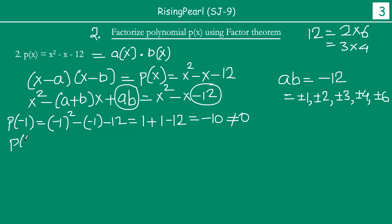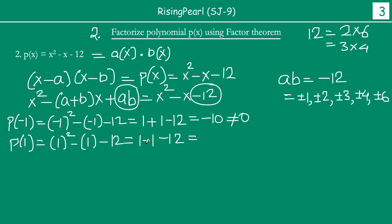Now let us take p(1). p(1) will be 1 squared minus 1 minus 12, which gives 1 minus 1 minus 12. The first two terms cancel out, leaving minus 12. This is also not equal to 0, so these are not the two values we are looking for.